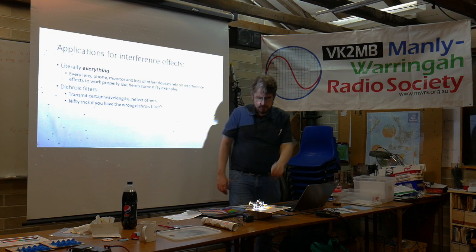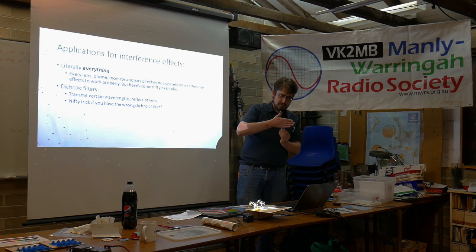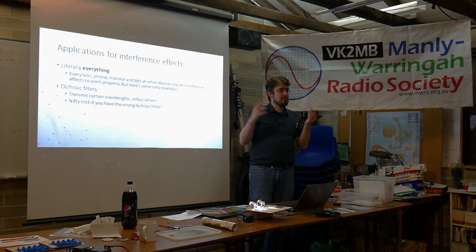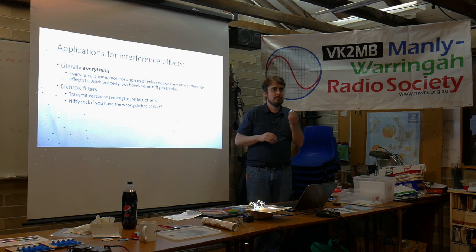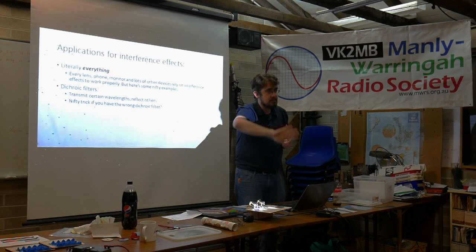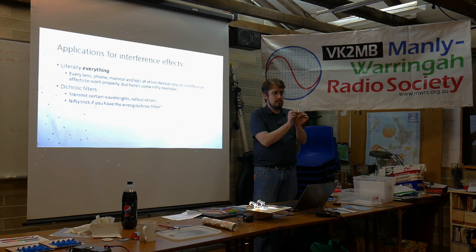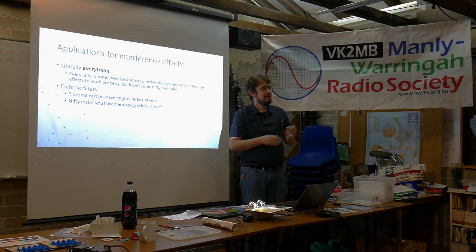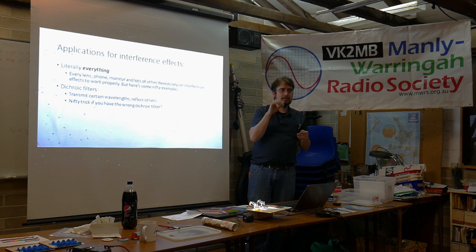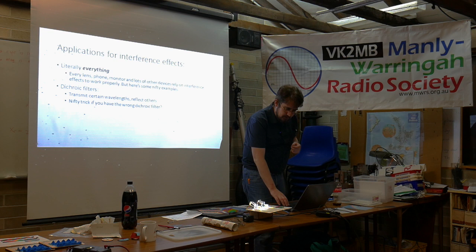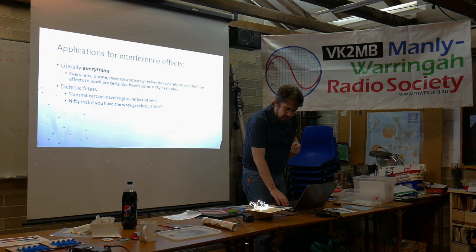A nifty property of dichroic filters: even though the coating was deposited in a clean room to a precise thickness, you can actually tweak the effective wavelength just by tilting the filter slightly. You can see it on my lamp — as it sweeps around it goes from orange to yellow. The reason: from the light's point of view, the effective thickness of the coating changes with angle. When lined up normally it's as thin as possible; at an angle the light travels through a greater effective depth. So if a dichroic filter isn't quite the wavelength you need, try tilting it a little.